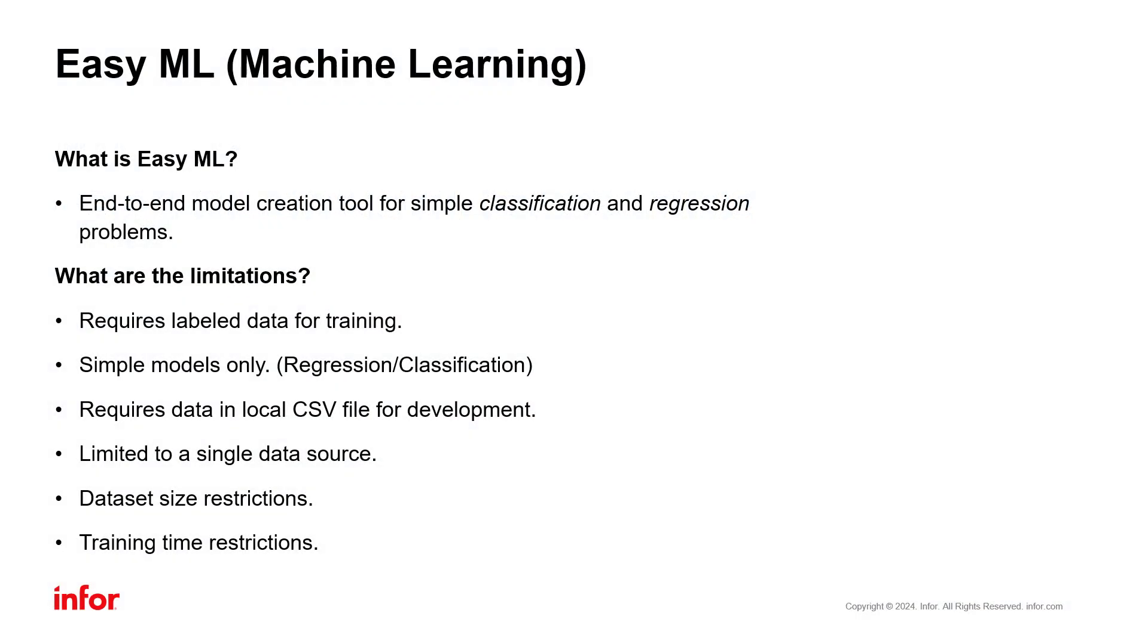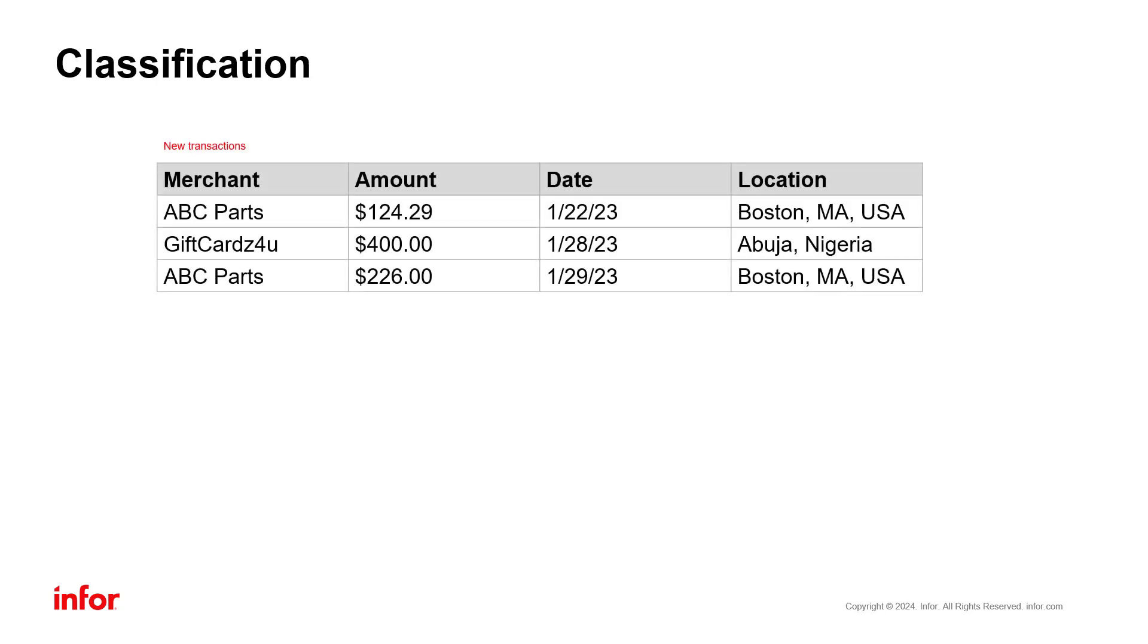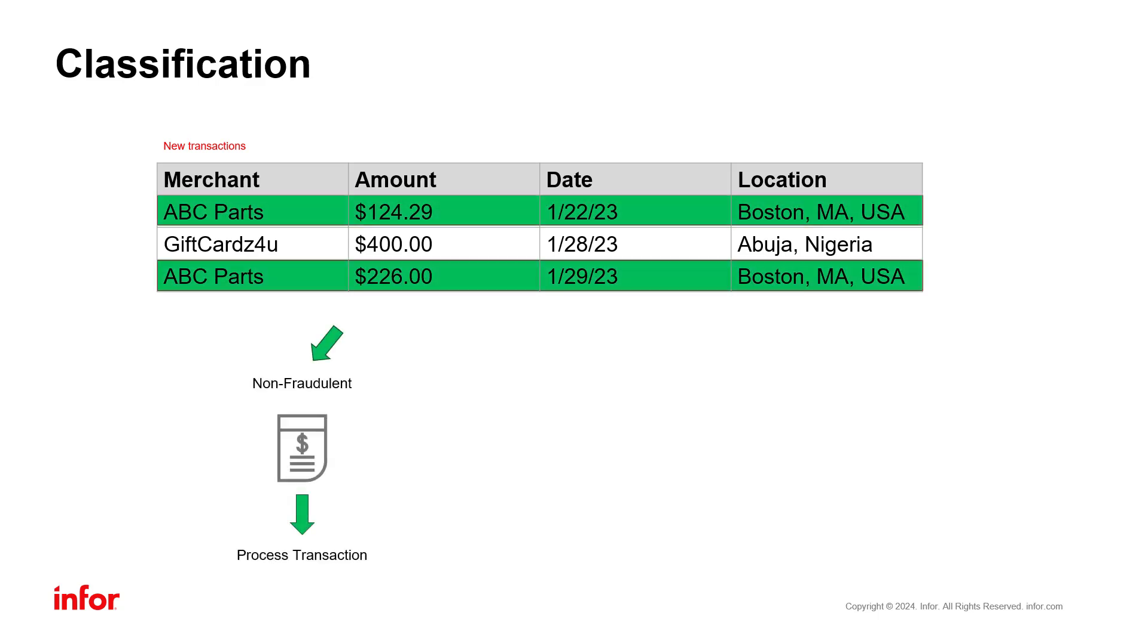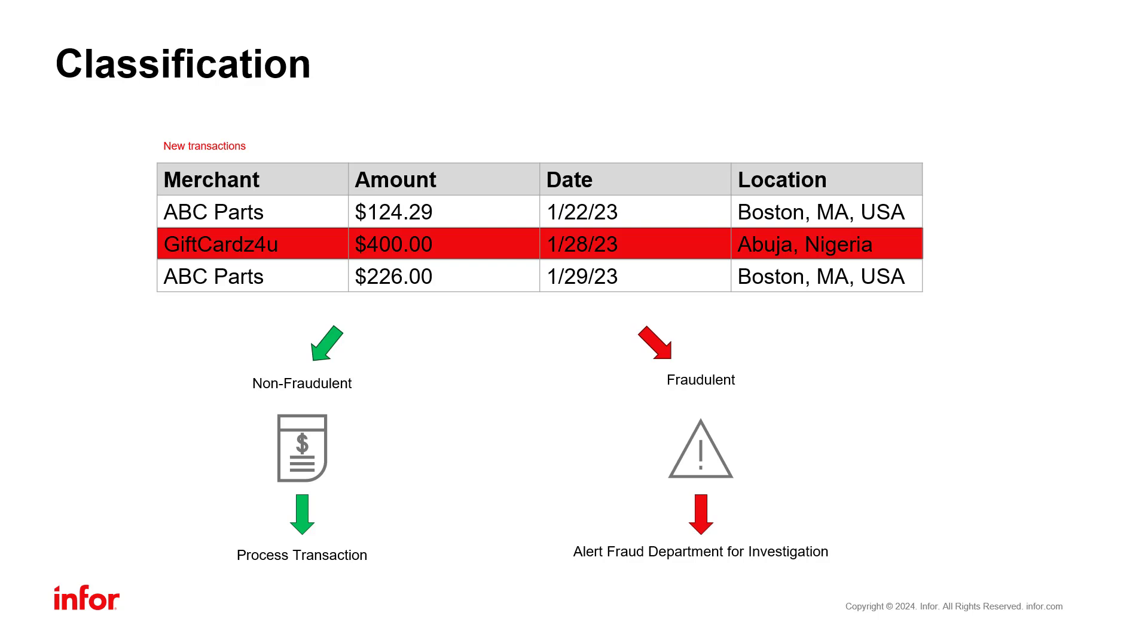Let's start with what EasyML is and what it isn't. EasyML will help with the end-to-end model creation for simple classification and regression problems. Classification problems are those that identify which category something belongs to, such as predicting if a transaction is fraudulent or non-fraudulent, or automatically sorting email as spam, bill, promotional, or important.